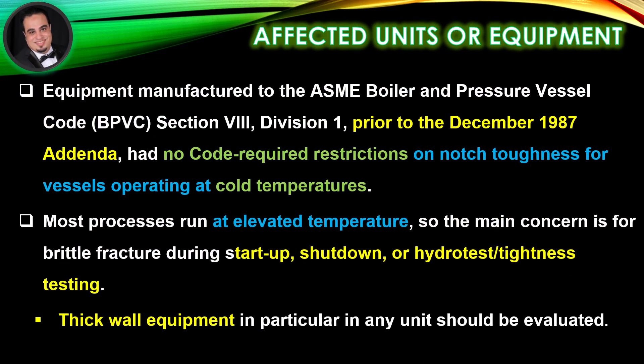Affected equipment: equipment manufactured to the ASME Boiler and Pressure Vessel Code Section 8, Division 1, prior to the December 1987 Addenda, had no code-required restrictions on notch toughness for vessels operating at cold temperatures. Most processes run at elevated temperature, so the main concern is for brittle fracture during start-up, shut-down, or hydro test/tightness testing.